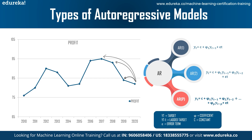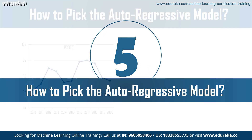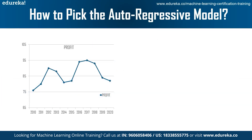The number of previous values is not limited to 1 or 2 — it can be any p values, and accordingly the equation will contain p coefficients. You might think it's obvious to consider all previous data points, however the rule of auto regression is to build the simplest model with the least number of parameters.